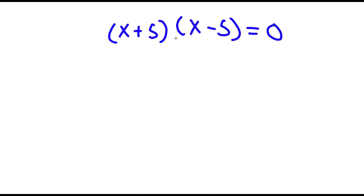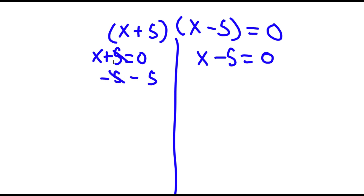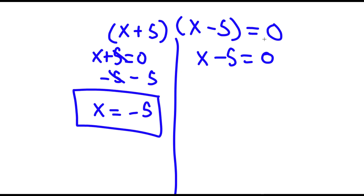Now from this, I have two equations: x plus 5 is equal to 0, and x minus 5 is equal to 0. To solve the first: if x plus 5 equals 0, I subtract 5 from both sides and I'm left with x is equal to negative 5. And for the second: if x minus 5 equals 0, I add 5 to both sides and I'm left with x is equal to 5.